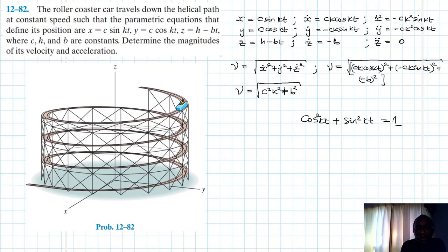Right, let's work out the acceleration. So we know that acceleration itself also is equal to the square root of x double dot squared plus y double dot squared plus z double dot squared.